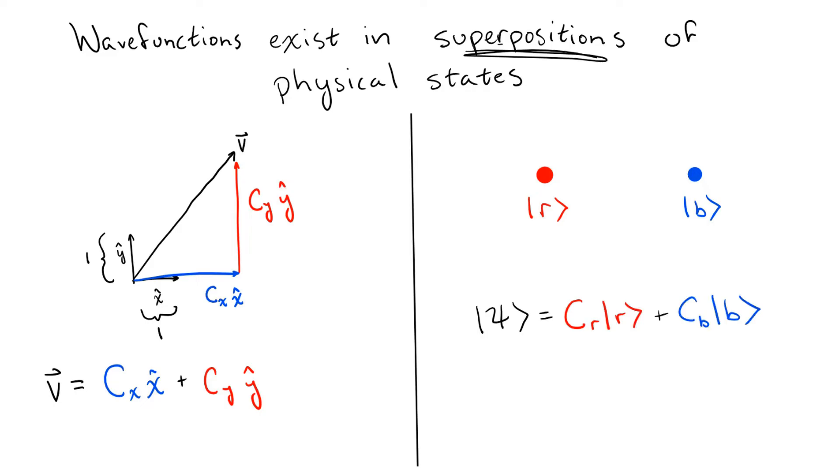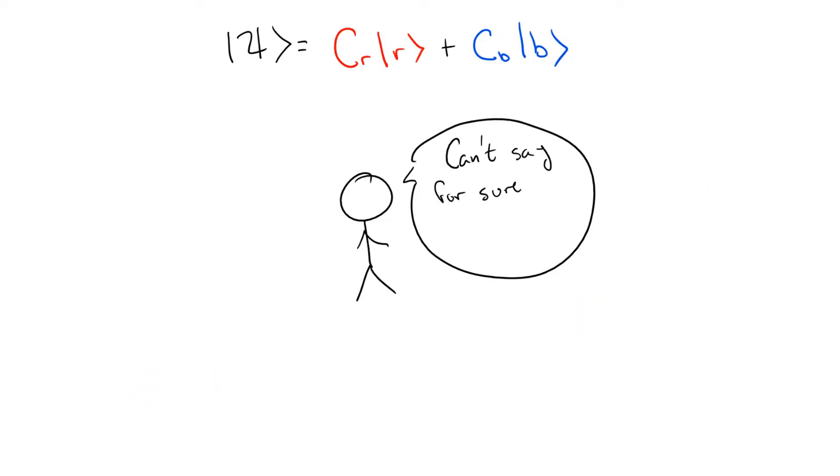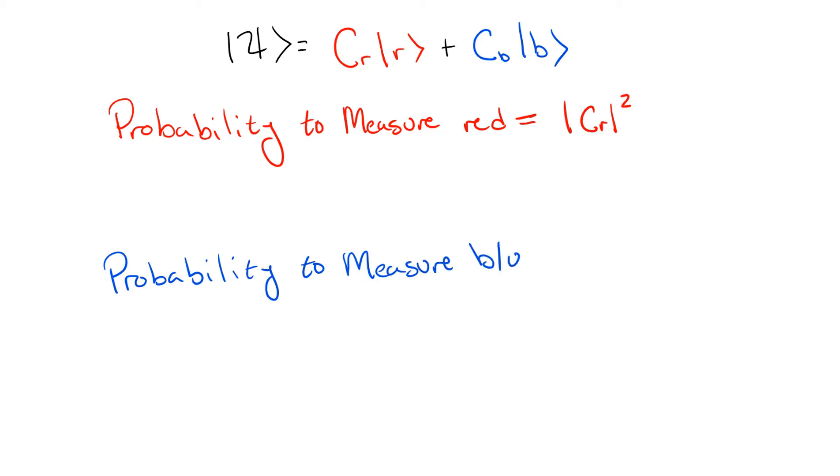Now, here's where things get a little strange. Since the state of the particles exists as a superposition, we can never exactly predict the outcome of a color measurement. However, we can calculate the probability of measuring the particle as either red or blue.